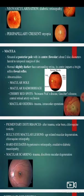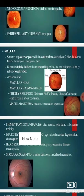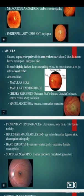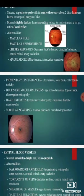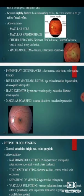The abnormalities of the macula include macular hole, macular hemorrhage, cherry red spots in case of Niemann-Pick disease, Gaucher disease, central retinal artery occlusion, and macular edema in case of trauma or intraocular operations. There can also be pigmented disturbances after trauma, solar burn, or chloroquine toxicity. Bullseye macular lesions are seen in age-related macular degeneration and chloroquine retinopathy.